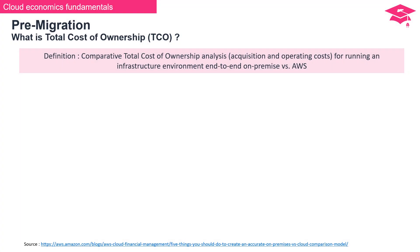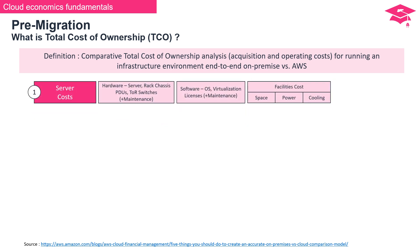Understanding total cost of ownership is crucial for informed decisions in infrastructure management. TCO involves a comprehensive analysis comparing acquisition and operating costs for running an infrastructure environment on-premise versus AWS. The first cost component is server cost. This includes hardware expenses like servers, rack chassis, power distribution units, top-of-rack switches, and maintenance. There are also software costs such as the operating system and virtualization licenses, plus facilities costs like space, power, and cooling.